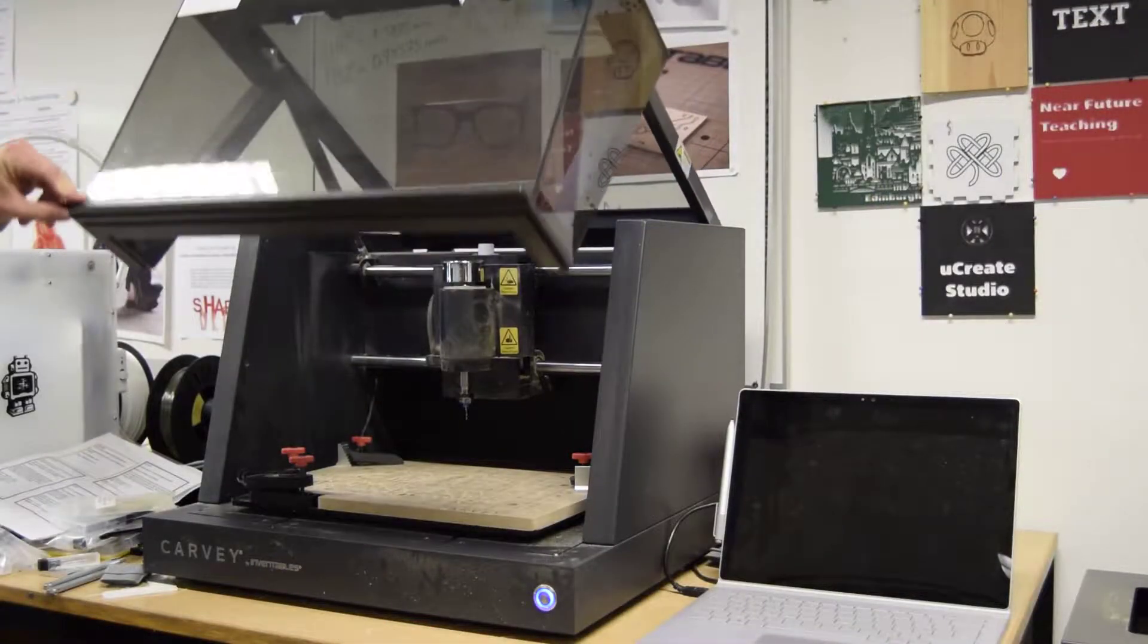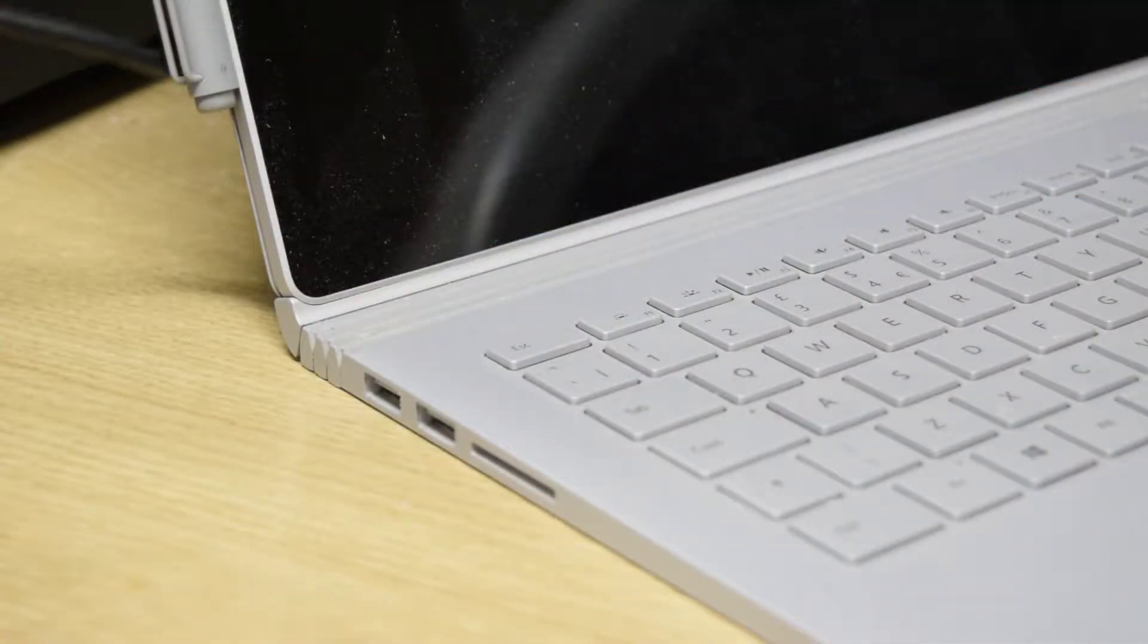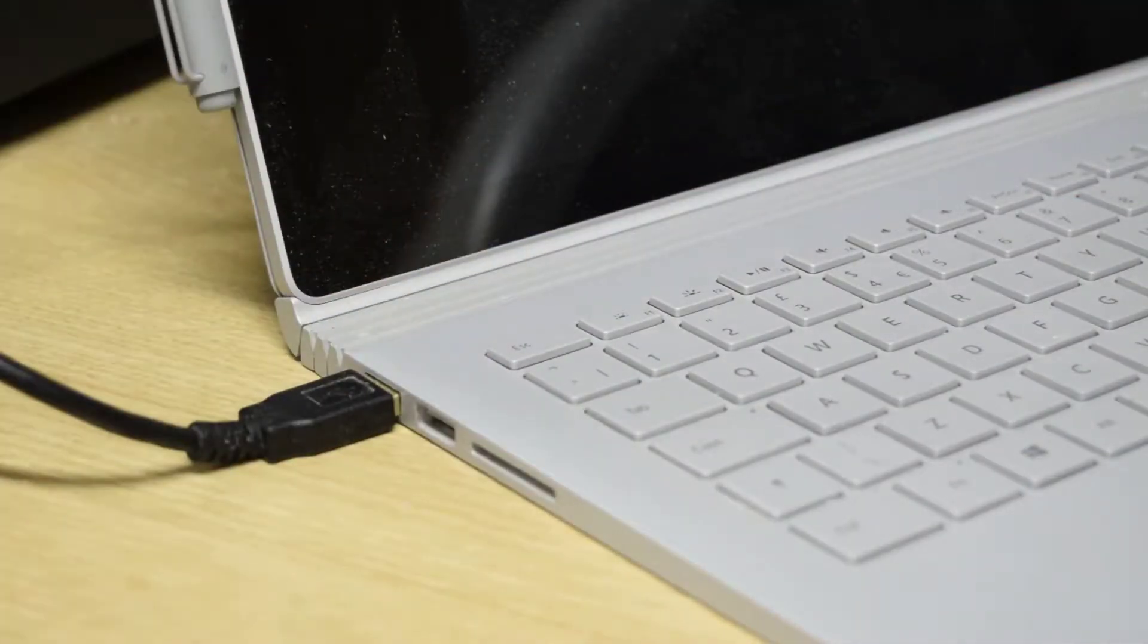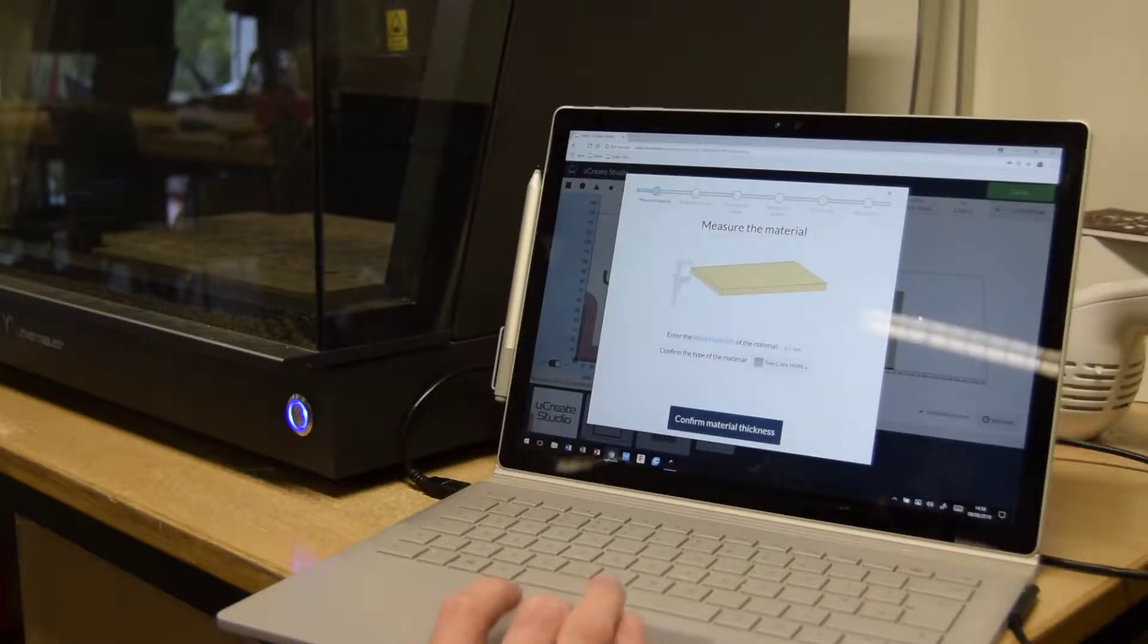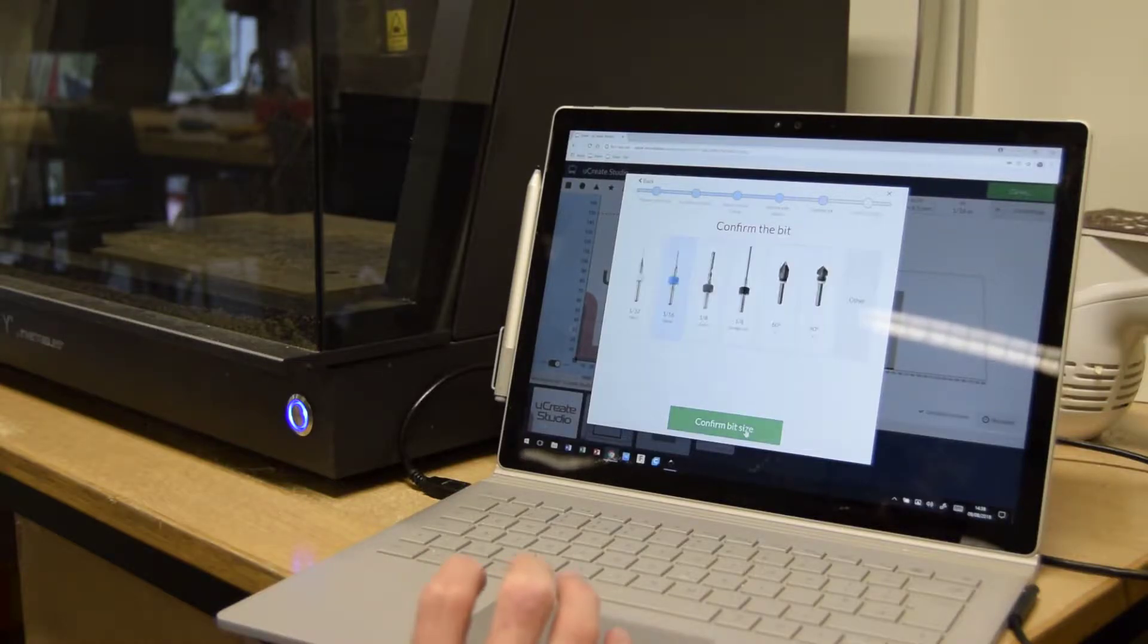Now close the lid and you are ready to carve. Connect your computer via the USB cable and click the carve button in Easel once it turns green. The software will guide you through a checklist to ensure everything is ready.